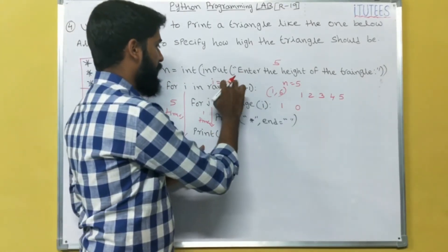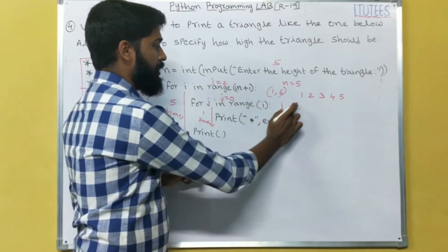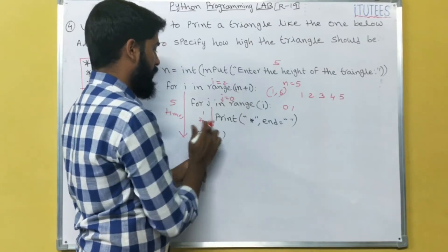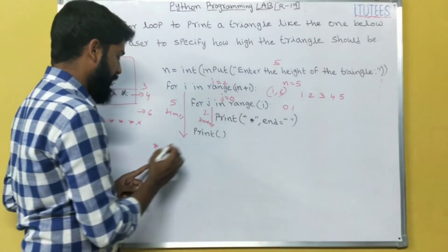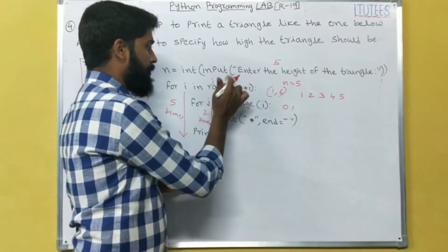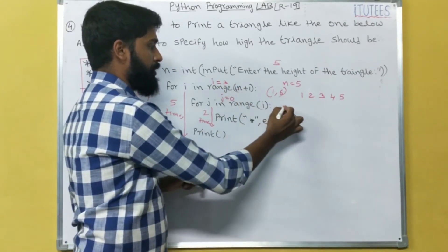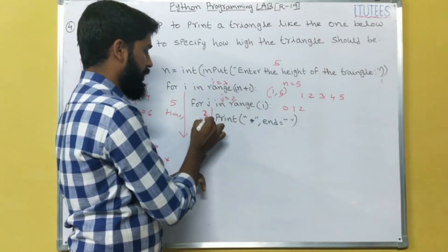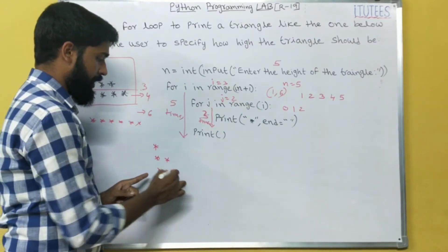So next iteration i becomes 2. For j in range of 2 means 0, 1, that means we enter 2 times. Asterisk, asterisk.